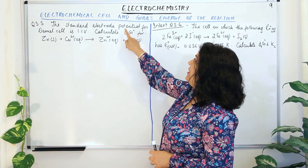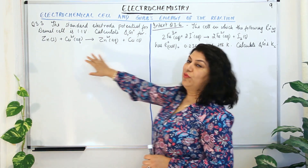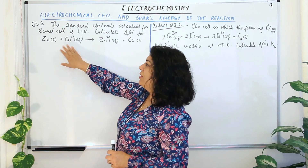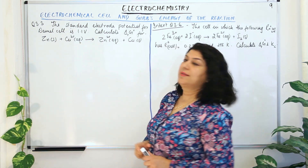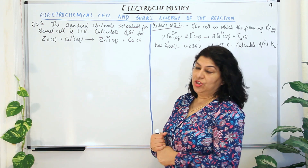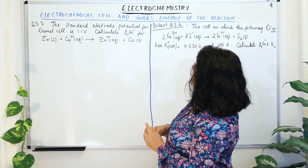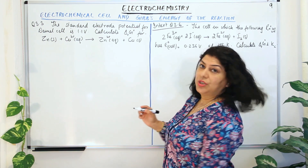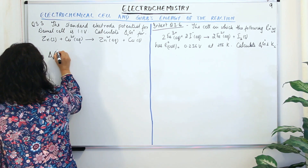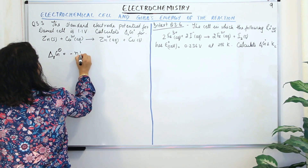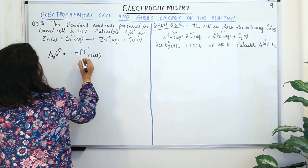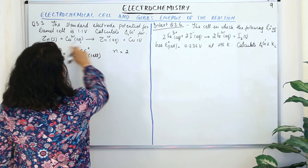You need to calculate the Gibbs energy of reaction, that is ΔrG°, for the reaction of Daniel's cell — zinc reacts with copper ions to give zinc ions and solid copper. We know that ΔrG° is equal to minus NF E° cell. The value of N for this reaction is 2 because there are two electrons being transferred.